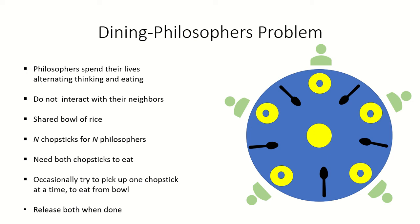In this video we will try to solve the dining philosophers problem using monitors, as we have seen in the previous lecture which explained the dining philosophers problem using semaphores. We have a set of philosophers seated around a circular table with a shared bowl of rice in between. These philosophers spend their lives thinking and eating and do not interact with their neighbors. There are n chopsticks for n philosophers, so if there are five philosophers then there are five chopsticks, and each philosopher needs both chopsticks to eat. Occasionally when a philosopher is hungry they will try to pick up one chopstick at a time and eat from the bowl, and once done eating they will release both chopsticks.